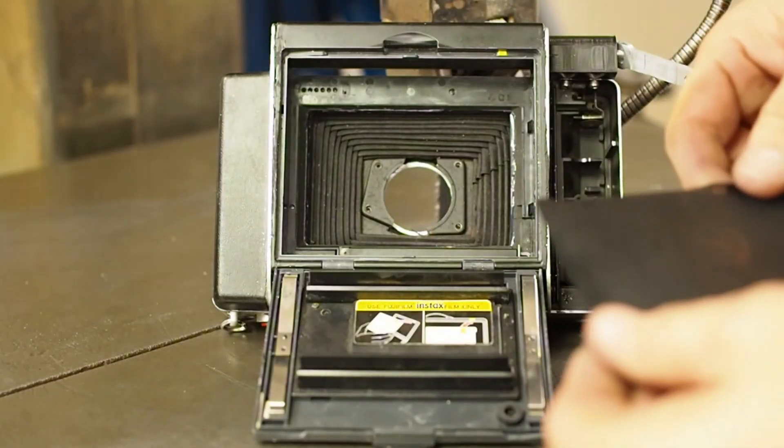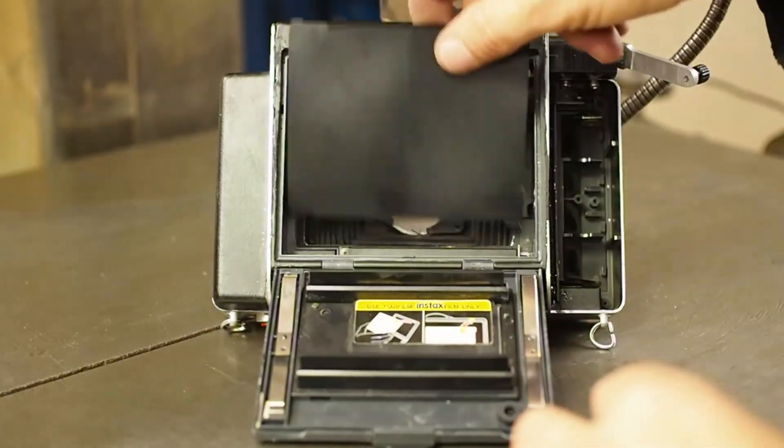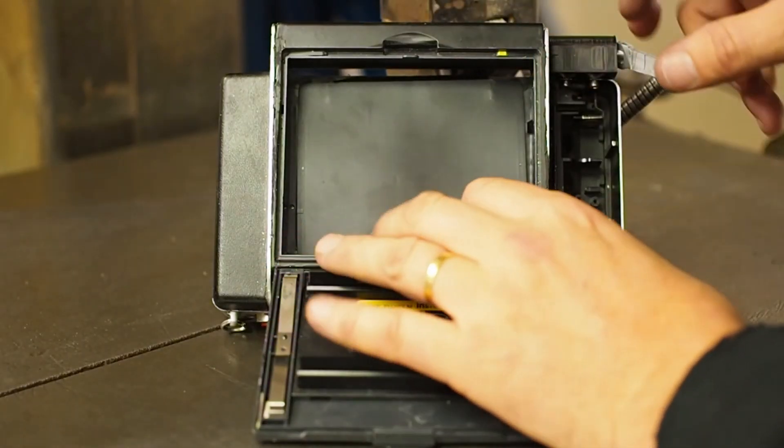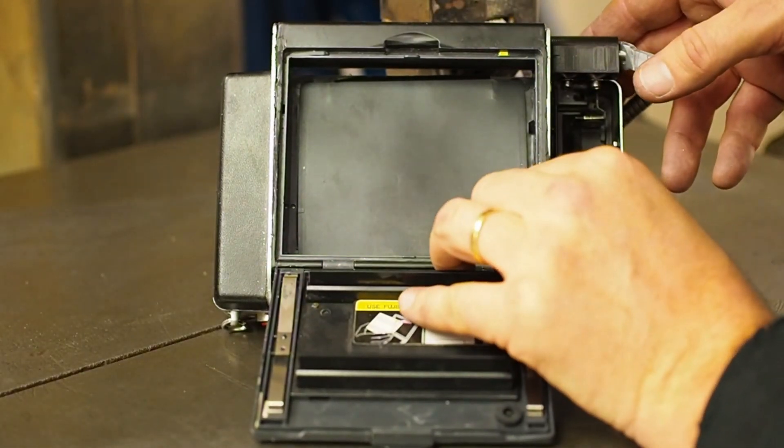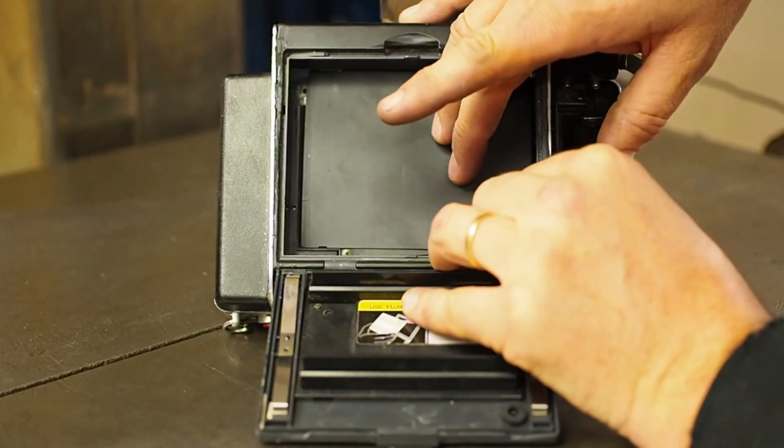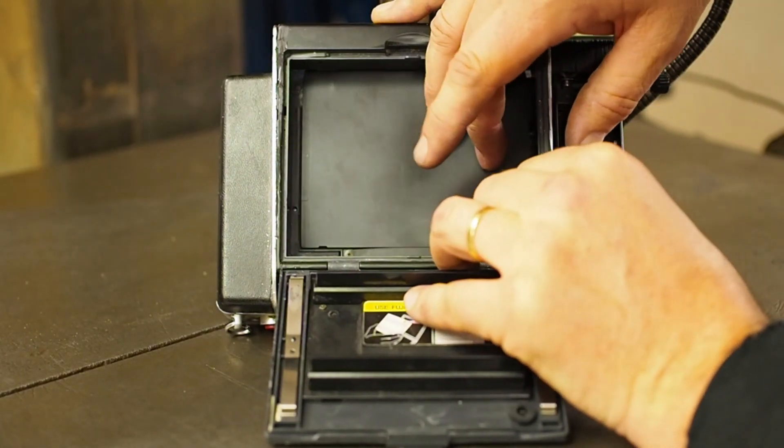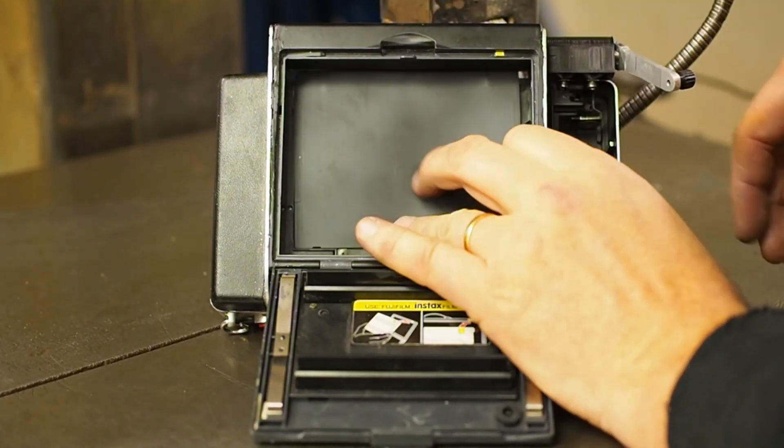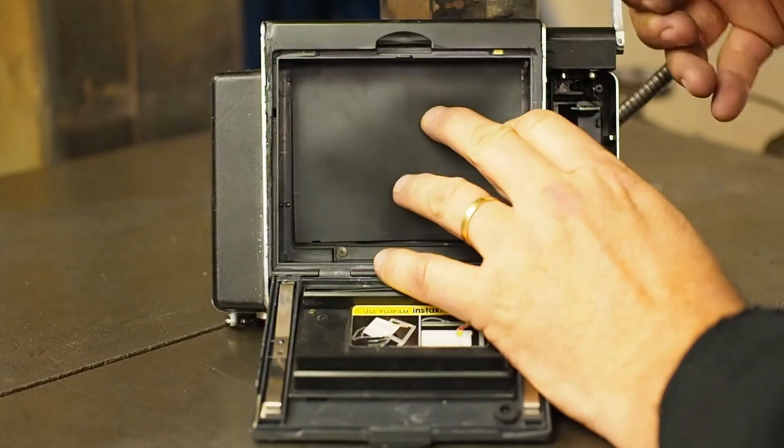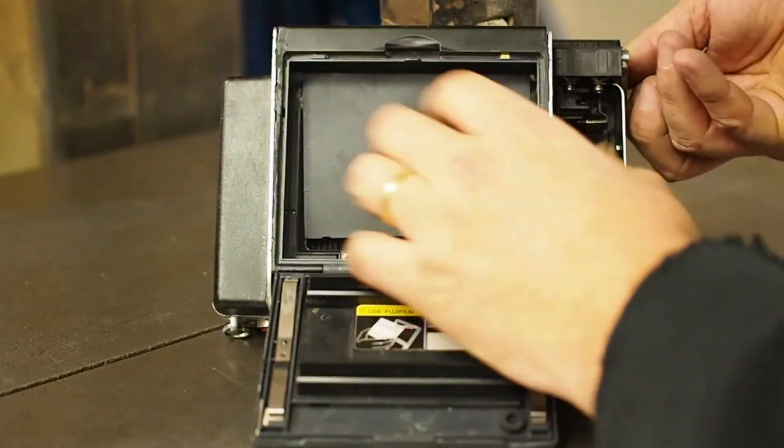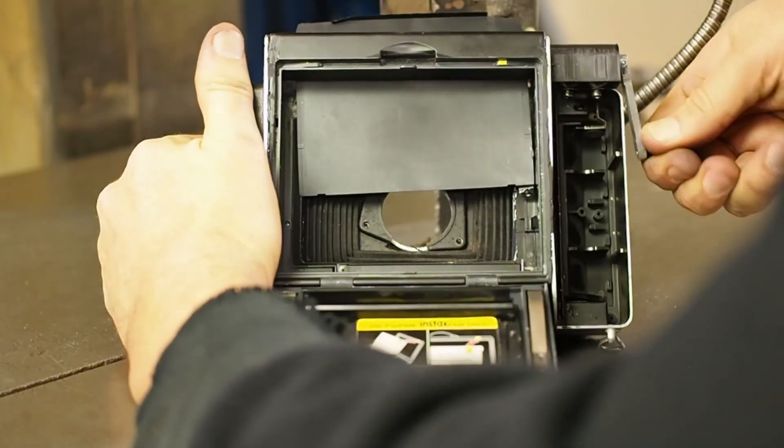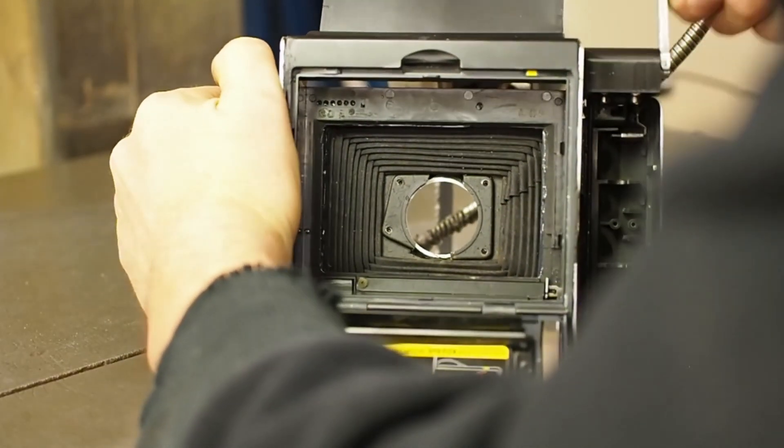First up, let's just test it with an old darkslade. So we'll throw that in, try kicking it up with the film kick out mechanism which doesn't work very well, but if we manually feed it into the roller we can see that with a bit of effort it comes out.